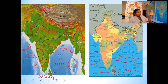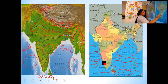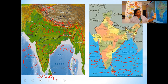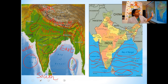You can see that three parts of our country are covered with ocean water. You know, if a land area is covered with water on its three sides, it is called a peninsula.